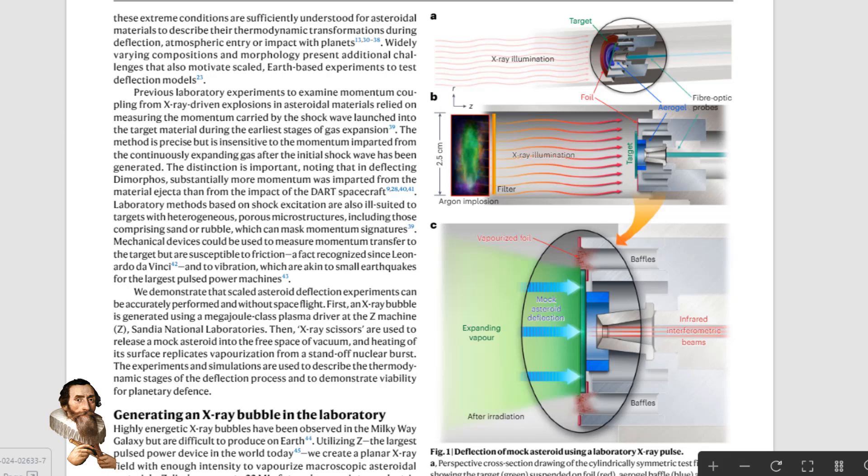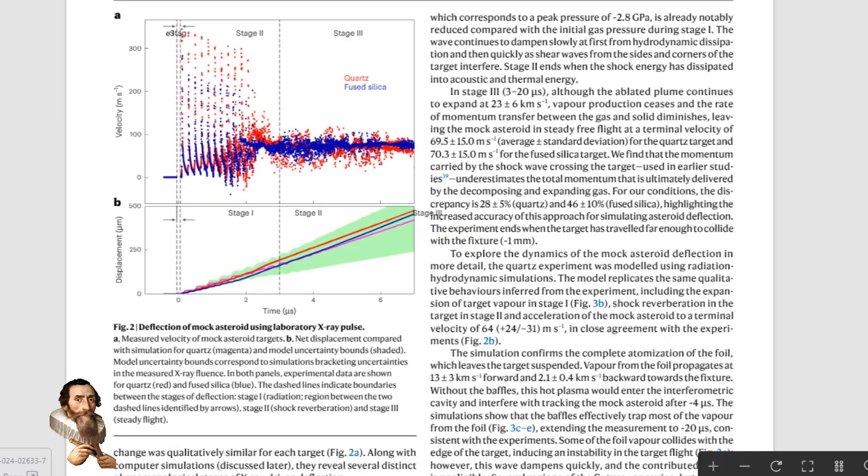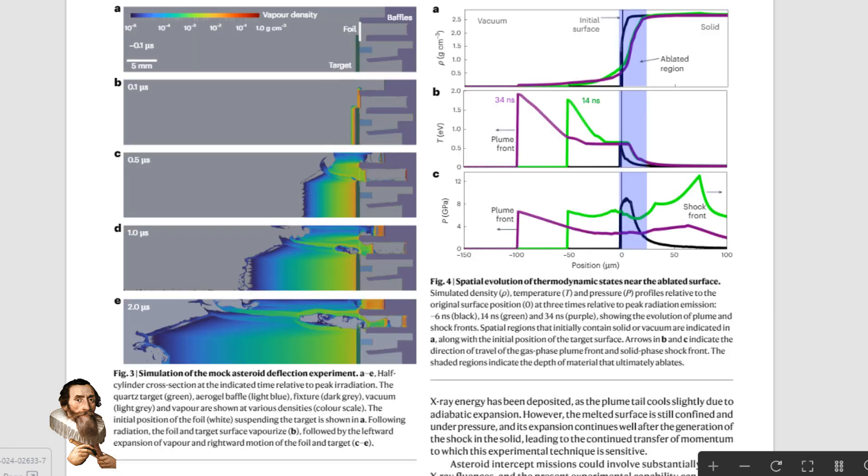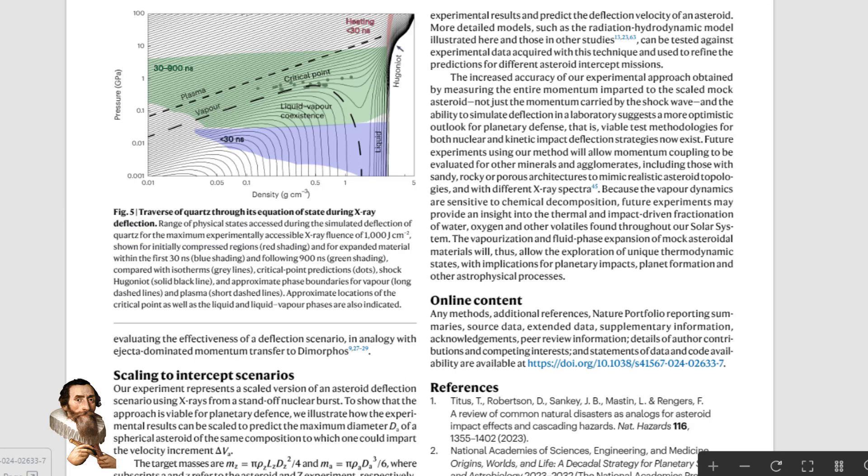The idea of using nuclear explosions to deflect asteroids is not new. Traditionally, the concept involved detonating a nuclear bomb on or near the asteroid to break it into smaller, less dangerous pieces. However, this approach carries significant risks, including the possibility of creating multiple hazardous fragments.